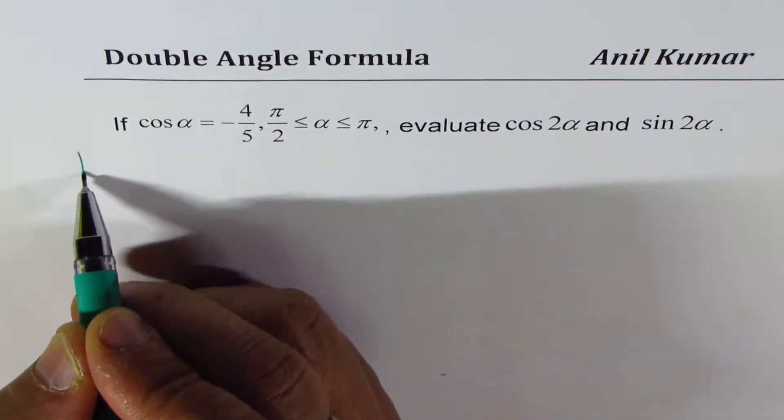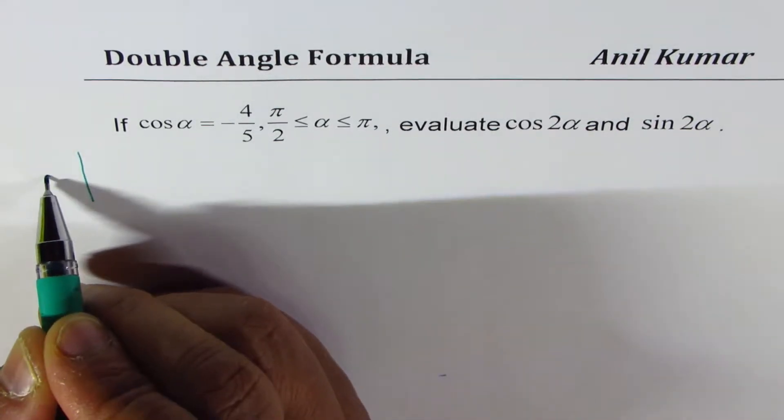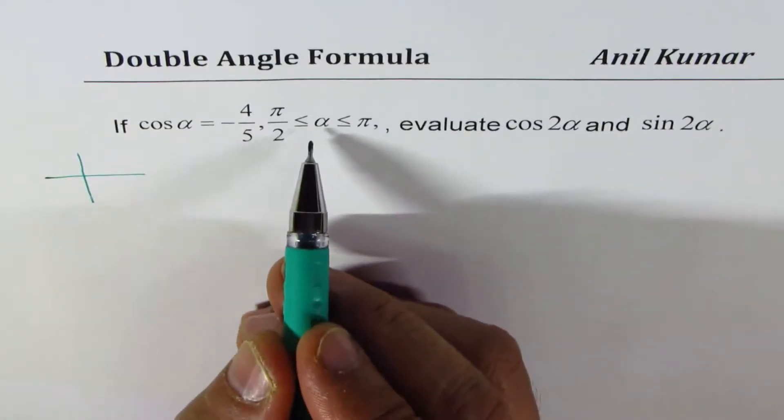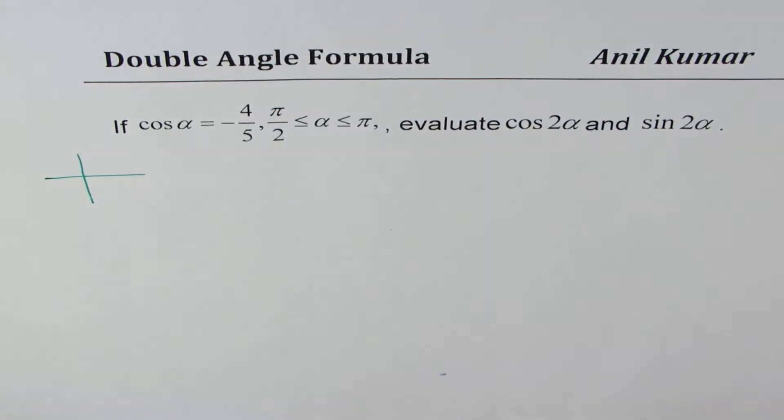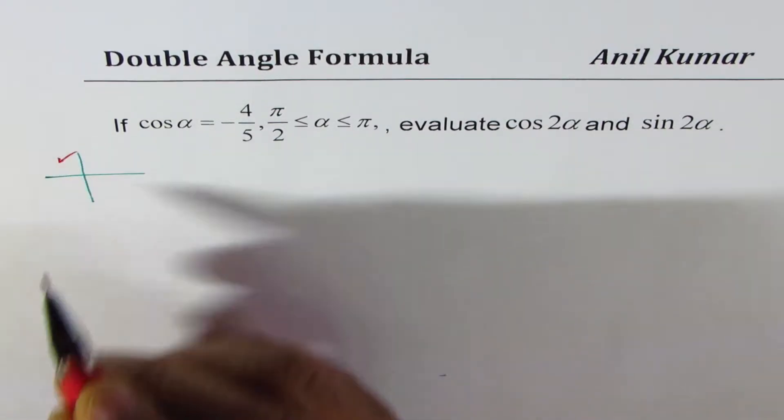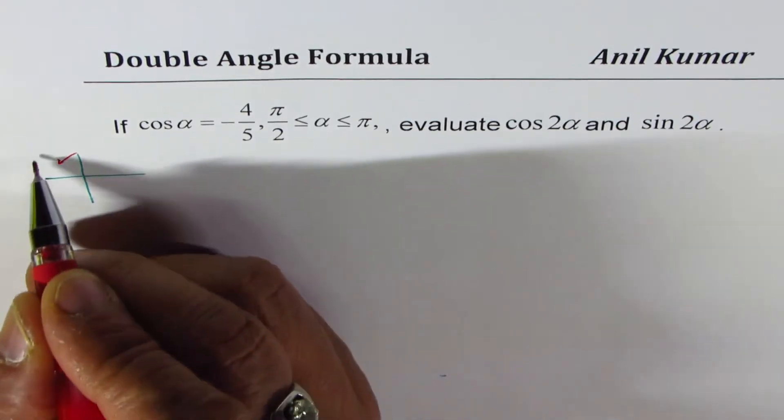So let's try to understand the position first. Alpha lies between pi by 2 and pi. That means it is in second quadrant. So it's in quadrant 2.